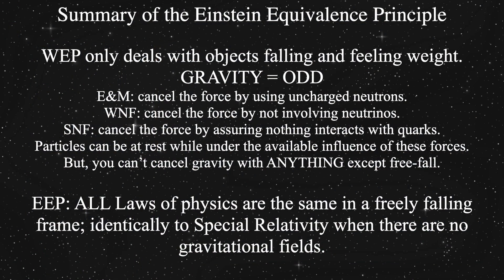It's also pretty important to notice that the Einstein equivalence principle says that gravity is actually extraordinarily odd and different among all laws of the universe. The electromagnetic force can only be cancelled by using uncharged neutrons. The weak nuclear force is cancelled by not involving neutrinos or W-plus bosons. The strong nuclear force can be cancelled by assuring nothing interacts with quarks. Particles can be at rest while under the influence of these forces, so long as they don't involve neutrinos, or don't have charge, or we're not talking about quarks. But you can't cancel gravity — except by freefall.